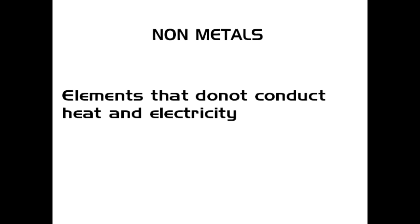The two categories are metals and non-metals. What is a non-metal? It has just the opposite property of metals. Non-metals are substances that do not conduct electricity and heat. They gain electrons in reactions, while metals lose electrons.